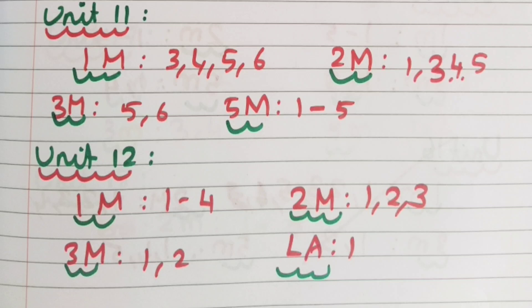Unit 11: 1 mark — 3, 4, 5, 6. 2 mark very short answer — 1, 3, 4, 5. 3 mark short answer — 5 and 6.